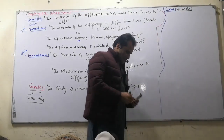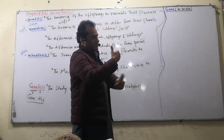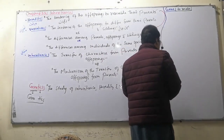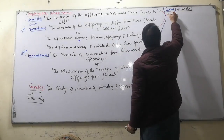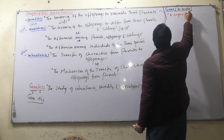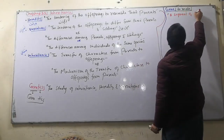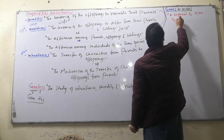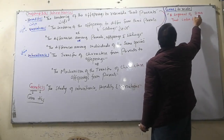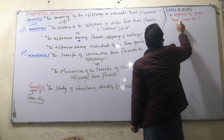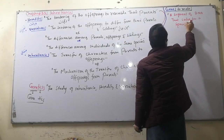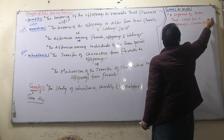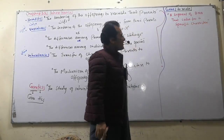The word genesis means the process of origin. The gene is defined as a segment of DNA that codes for a specific character in an organism.